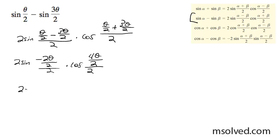We write this as 2 sine negative 2 theta divided by 4 which becomes negative theta divided by 2 times cosine of theta.